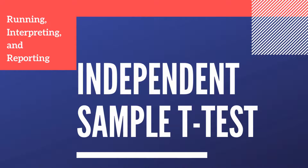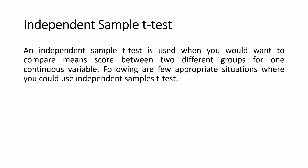In this session we are going to look into how to run, interpret, and report an independent sample t-test. An independent sample t-test is used when one wants to compare mean scores between two different groups for one continuous variable. We are also going to look into some assumptions for the independent sample t-test and a few appropriate scenarios in which it can be used.